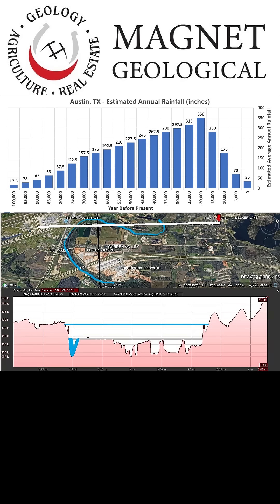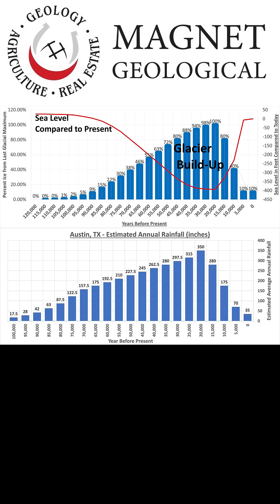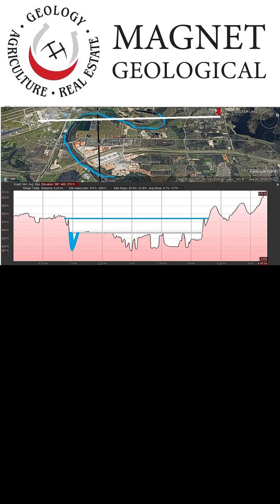All this rain formed large valleys, like what is seen in Austin in the Colorado River Valley. Since then we have had a loss of glaciers and a loss of precipitation. The rivers still exist, but they are much smaller streams in old large valleys. In geology we call this an underfit stream.